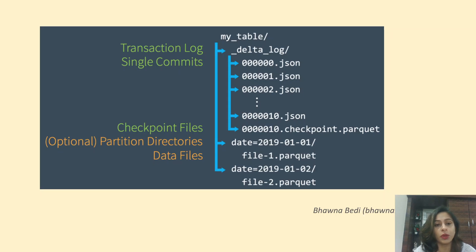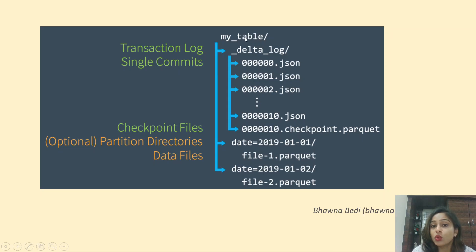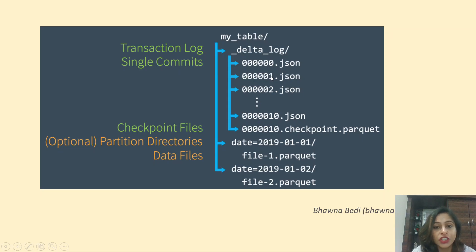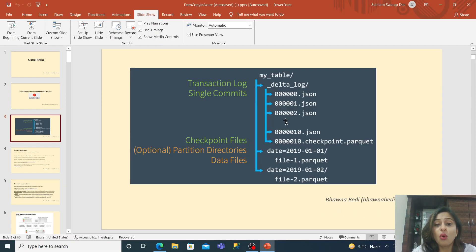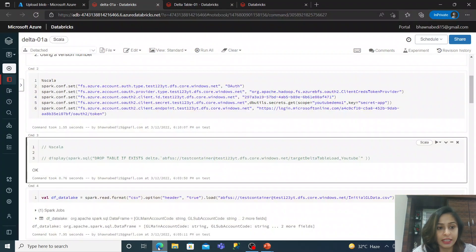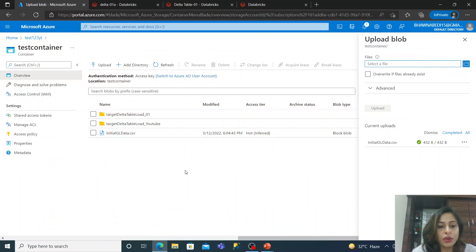The transaction log is the heart of the Delta table. Whenever you create a table — let's say 'my_table' — under that Delta table you have Parquet files, snappy Parquet files, and inside that you also have an '_delta_log' folder which contains JSON files. These JSON files are called transaction files, and you also have checkpoint files. This is the structure of your transaction log which holds all information about your Delta table.